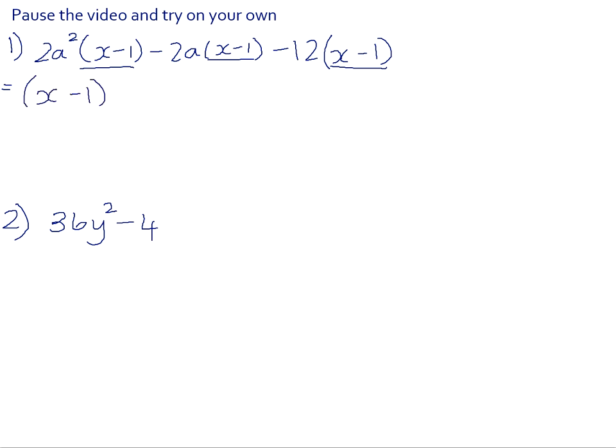So we take x minus 1 out as the common factor. And in actual fact, I haven't taken out the full common factor yet because there's also a common factor of 2. 2 goes into 2, 2 goes into 2, and 2 goes into 12. So my highest common factor is 2 and the x minus 1.